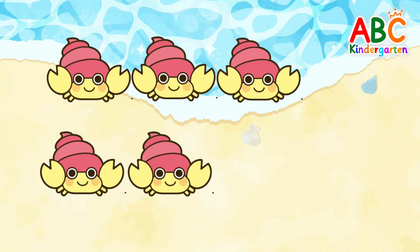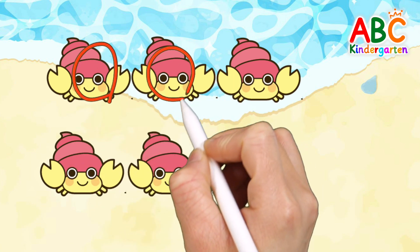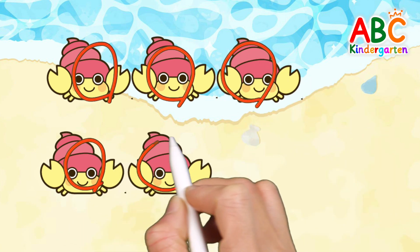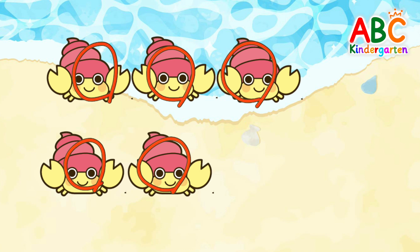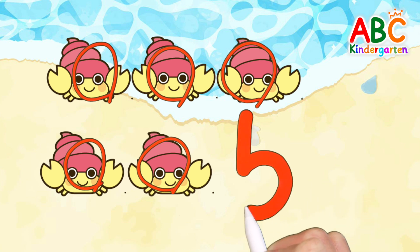Let's count the hermit crabs on the beach and write down their numbers. 1, 2, 3, 4, 5. 5 hermit crabs! Write the number 5. 5. Good job!